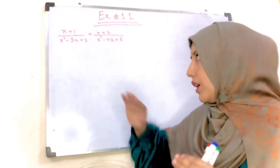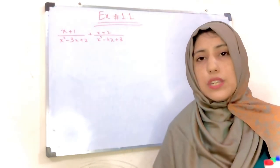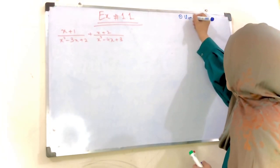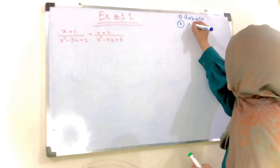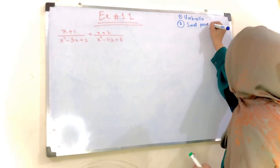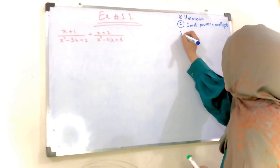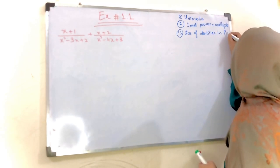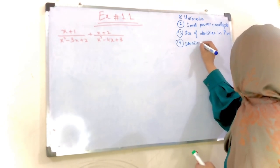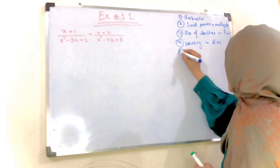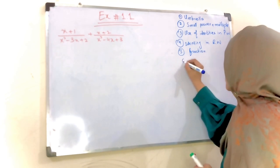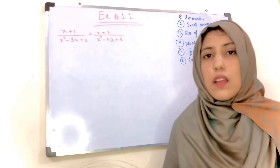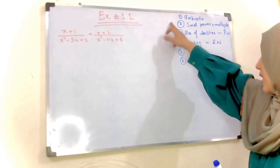In this video I am going to solve example questions by using those six ways. Those six ways are: first, the umbrella method; second, small power plus multiple as common; third, use of identities in the proper way; fourth, use of identities in reverse way; fifth, fraction; and sixth, factorization. Now I am going to solve these questions by using these six ways.